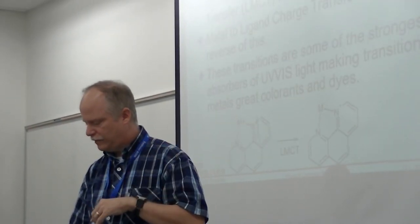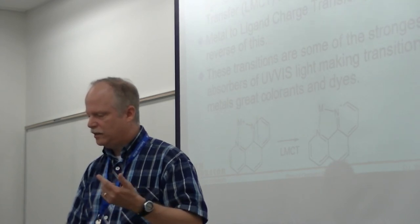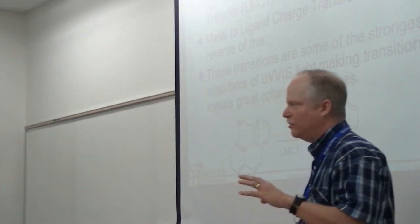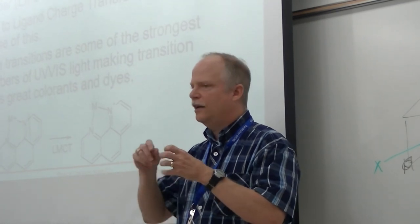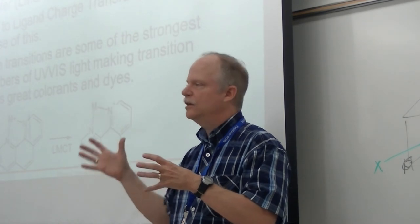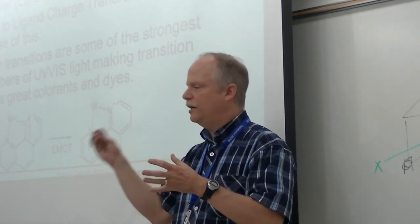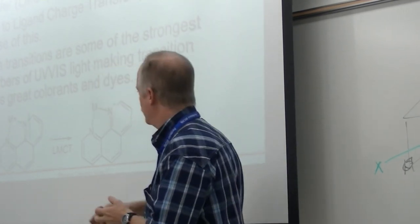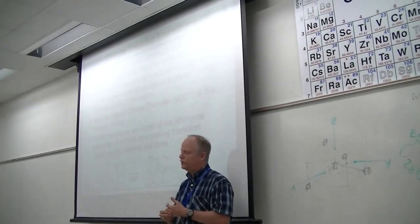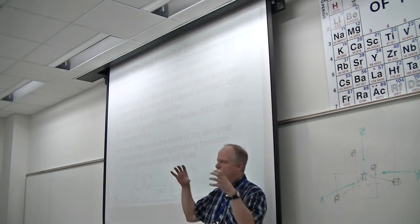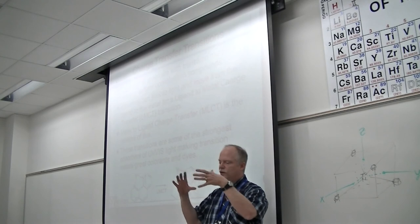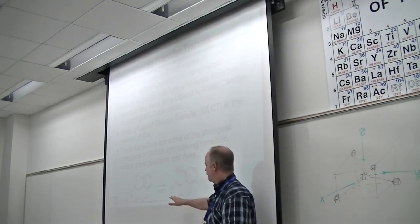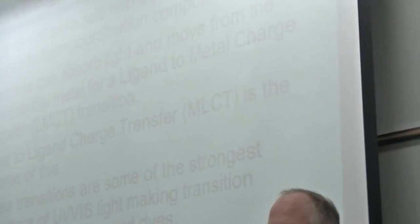The strongest absorbing inorganic molecules are ones involving charge transfer — where the metal cation transfers an electron to the ligand, or the ligand transfers to the metal. These ligand-to-metal or metal-to-ligand charge transfer transitions have the strongest absorbances. Iron phenanthroline, for example, is one of the strongest absorbers — you can achieve very low detection limits for iron using phenanthroline as a ligand. It associates with the iron ion in solution in a propeller-like arrangement, with three phenanthroline ligands around an octahedral complex, giving really strong absorption.